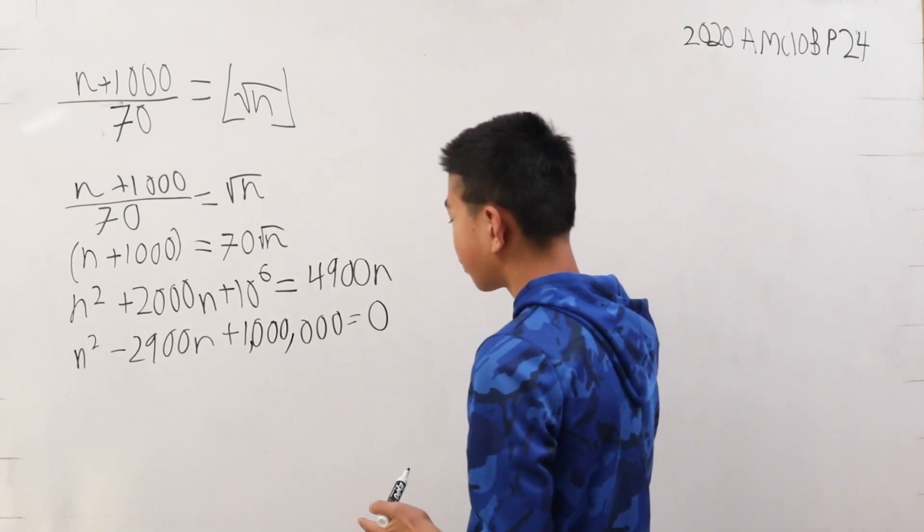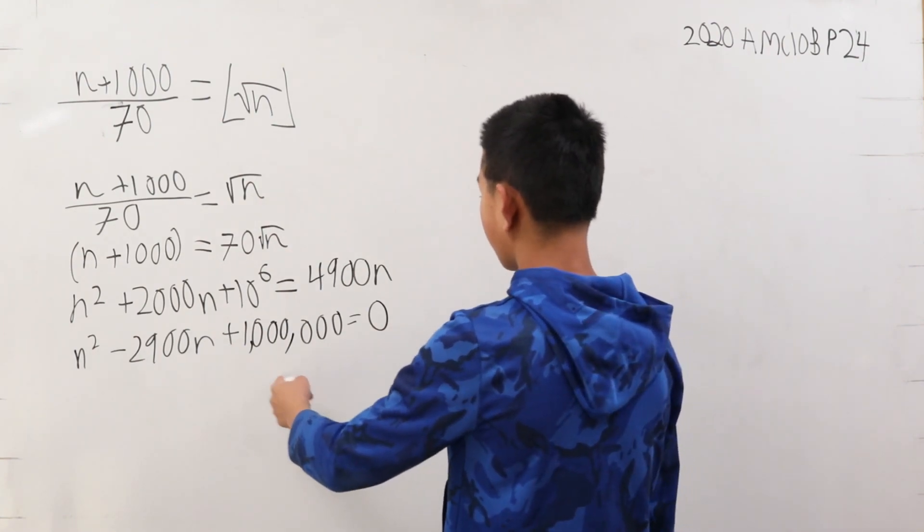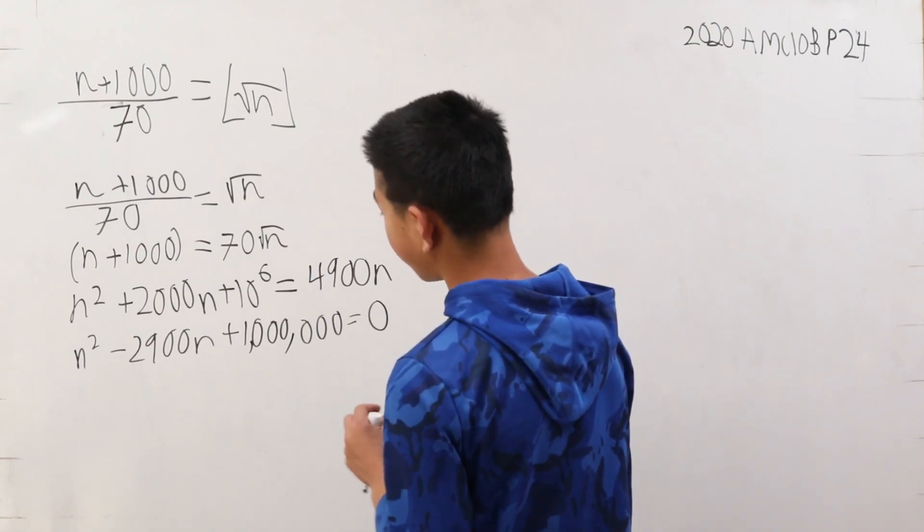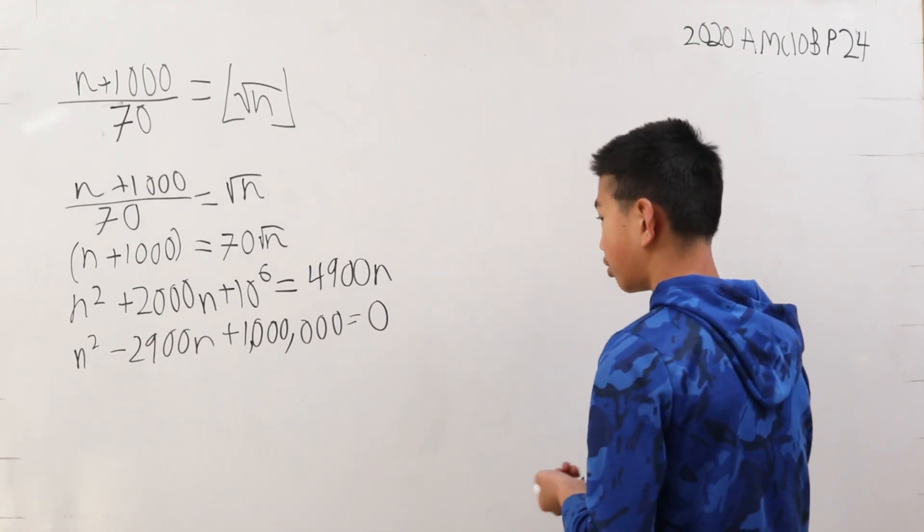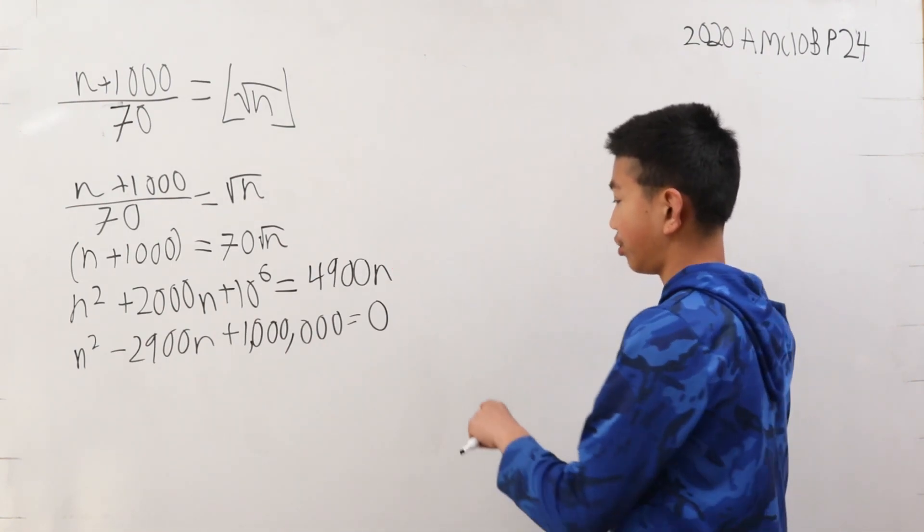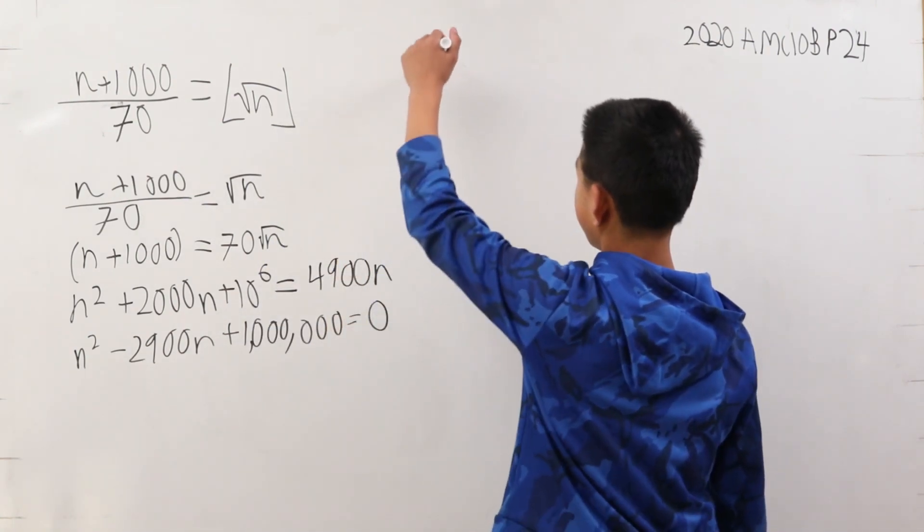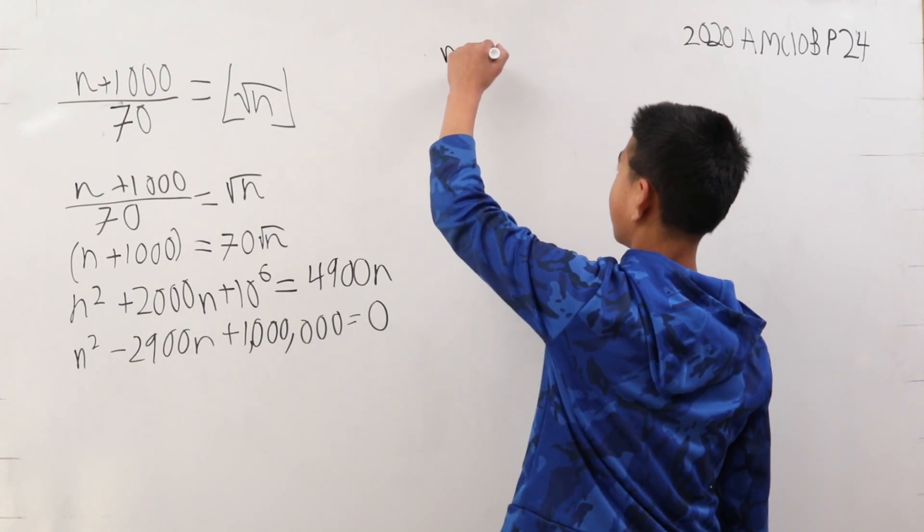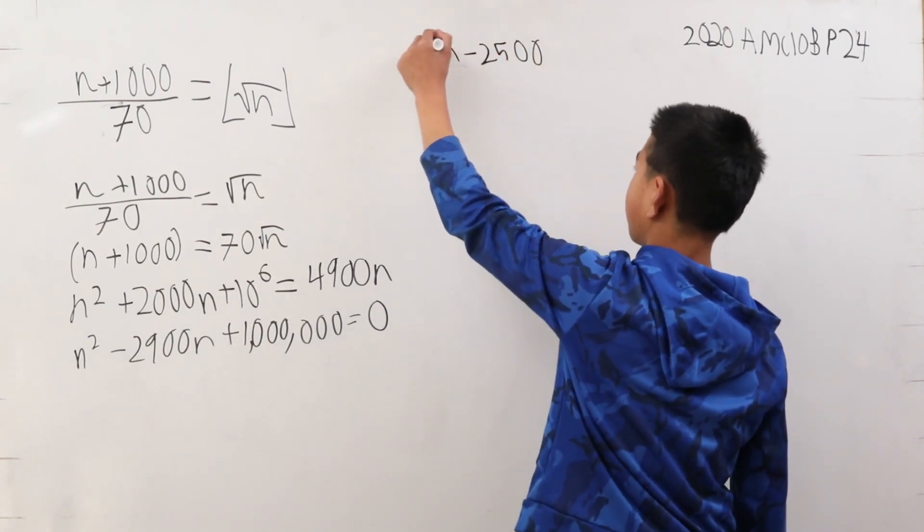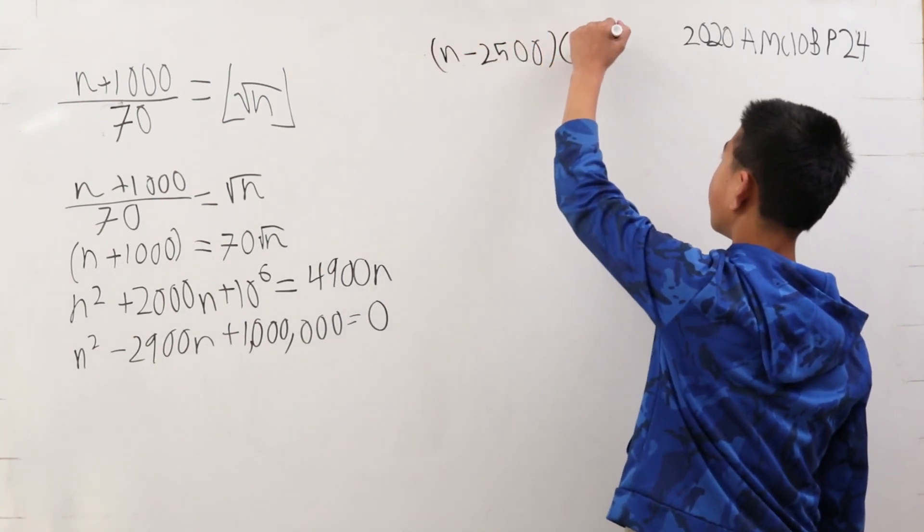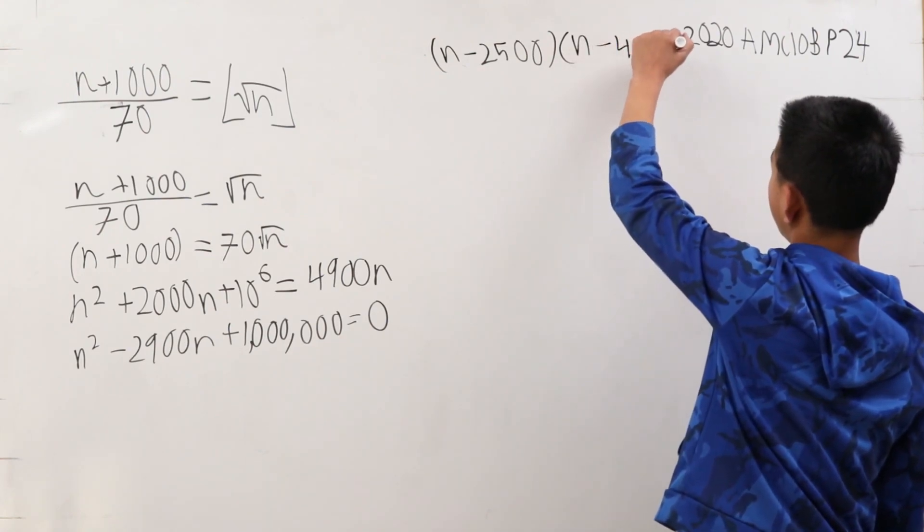Well, let's see here. This is some really big numbers, but we can still factor this out, because 2,500 times 400 is a million. So, let's just do that. This then becomes n minus 2,500 times n minus 400 is equal to 0.